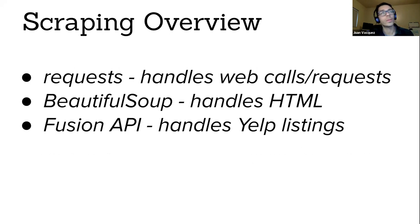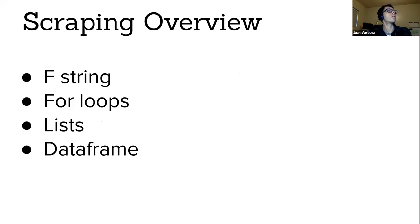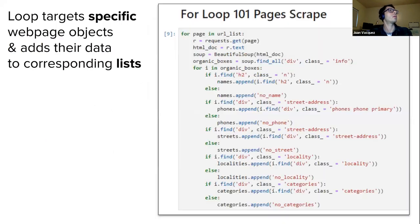We're going to use a number of technologies: the Requests library, Beautiful Soup to handle HTML, and Yelp's API. Requests will create web service calls to bring data into our environment. Beautiful Soup will be used for the Yellow Pages. We're going to use F-strings, for loops, and ultimately put our scraped data into a data frame for exploration.